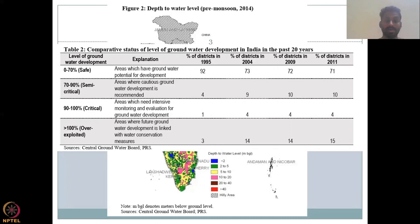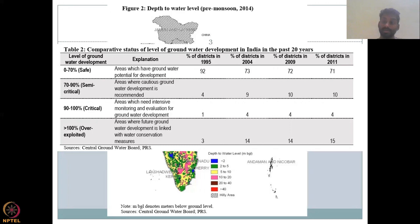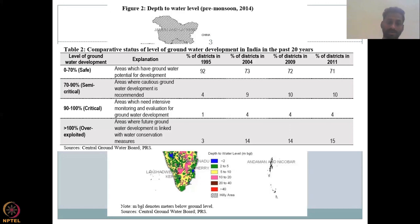If you look at 70% to 90% — meaning almost the total groundwater has been extracted — those are called semi-critical, and you have to be very cautious. You have to be careful about taking further water, because you might easily slip into the 90% to 100% range. A little development is recommended, but very cautiously.